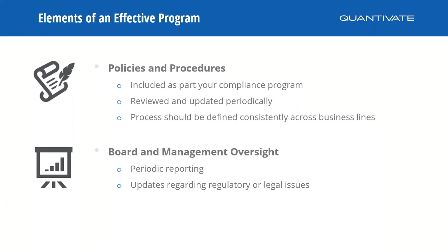There should be centralization across all business lines — everyone should have the same methodology for submitting complaints and gathering the same information. For board and management oversight, at least quarterly reporting is considered best practice. Report high-risk areas or complaints, the numbers, categories, and any trends the board should be aware of. This supports decision-making across departments. If there is a product, service, or location being impacted by complaints, everyone needs to be aware.